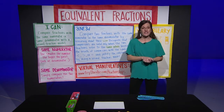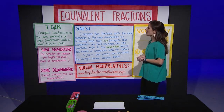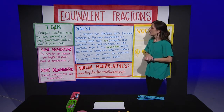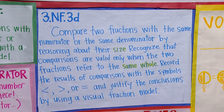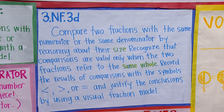Now I want to begin with our standard, which is 3NF3D: Compare two fractions with the same numerator or the same denominator by reasoning about their size. Recognize that comparisons are valid only when the two fractions refer to the same whole. Record the results of comparisons with the symbols less than, greater than, or equal to, and justify the conclusions by using a visual fraction model.